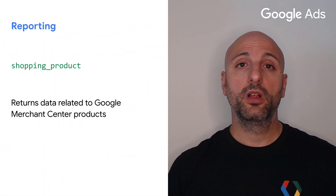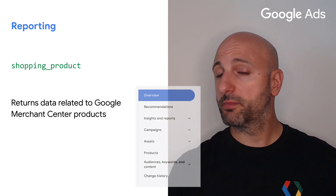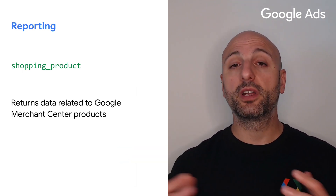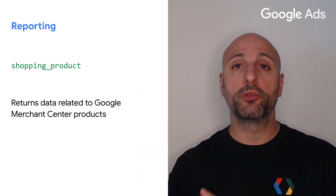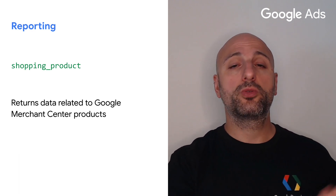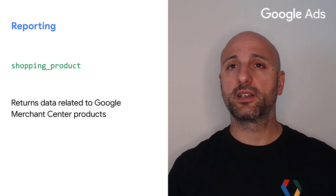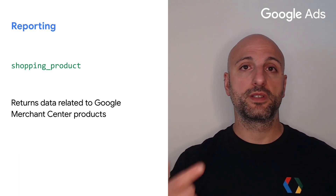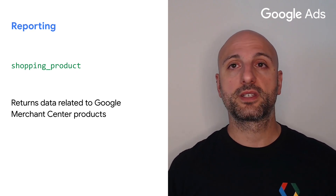Speaking of Performance Max, one of the topics that always comes up when we discuss it with the developer community is reporting. In version 17 we added three new reports to help you measure the performance of your campaigns. First, we have the shopping product report, which corresponds to the products page of the Google Ads UI. It supports returning data related to the current state of products from Google Merchant Center accounts linked to a Google Ads account, such as issues affecting whether or not a product can show in ads. You can also get metrics such as clicks, impressions, and conversions for current products, filterable by date.